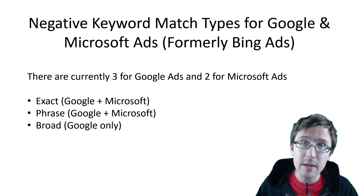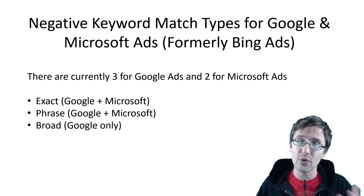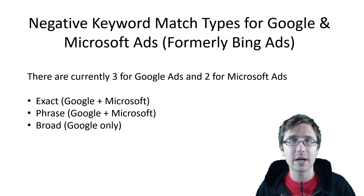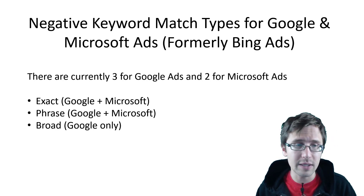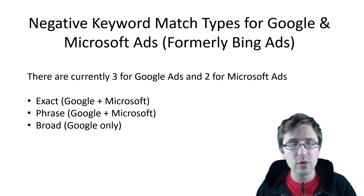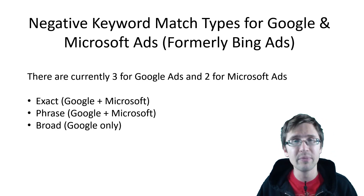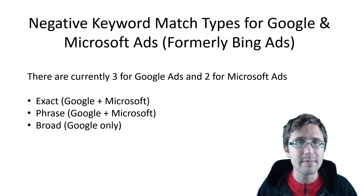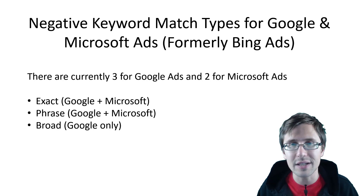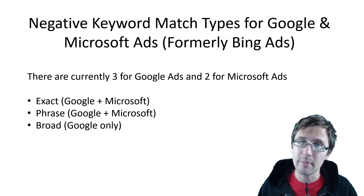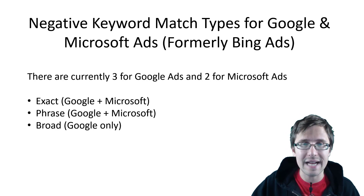There are currently three negative keyword match types — three for Google and two for Microsoft Ads. Exact match type is available for both Google and Microsoft, phrase is both for Google and Microsoft, and broad is for Google only. But as you understand how these match types work, you'll realize it's not that big of a deal that broad match is not in Microsoft Ads. So let's go to the first slide: exact match type.